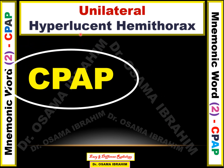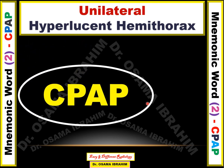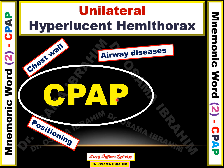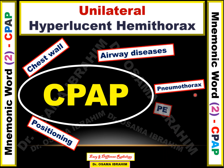This diagram also shows the CABAB differential diagnosis for unilateral hyperlucent hemithorax: chest wall from C, positioning from B, airway disease from A and B, and pneumothorax or pulmonary embolus from P.